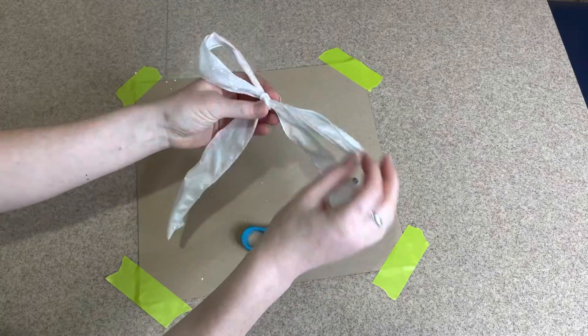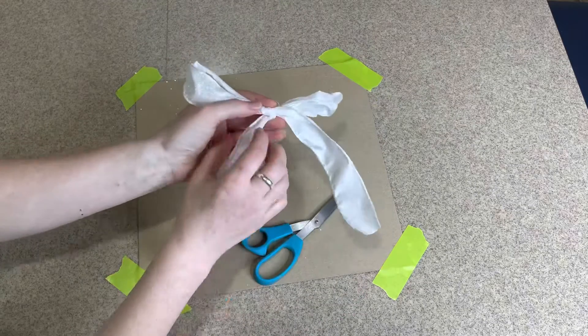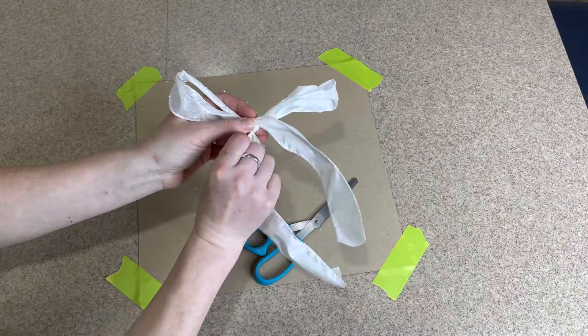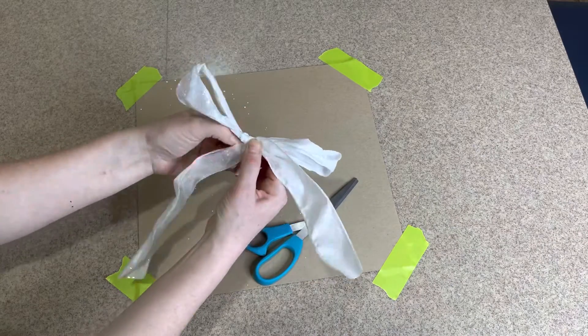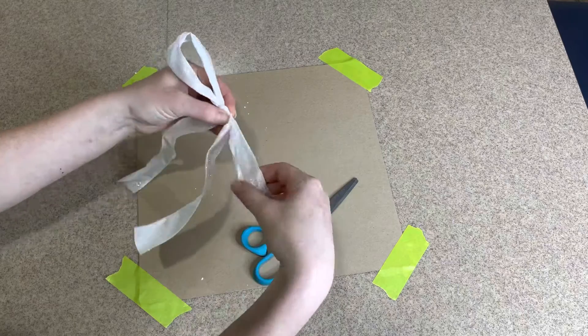Once they're tied together, as you can see, they need a little bit of work. So we're going to fan out each side and lay the ribbon flat so that way it's viewable from the front.